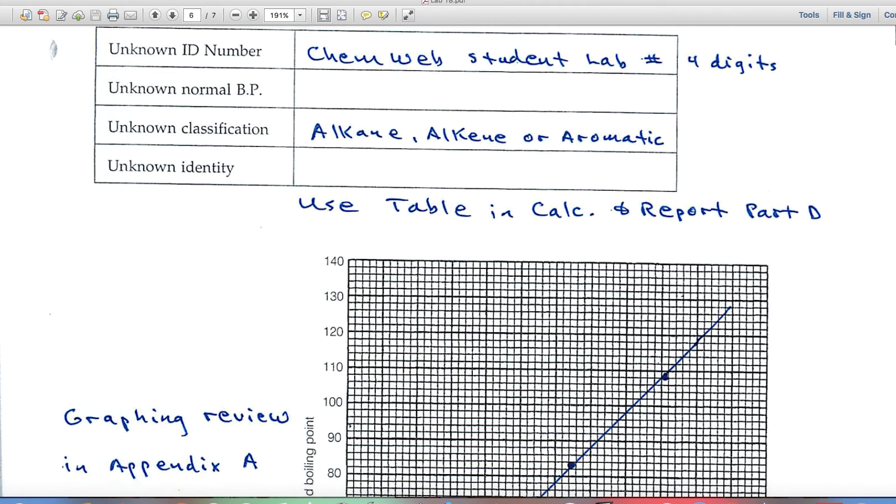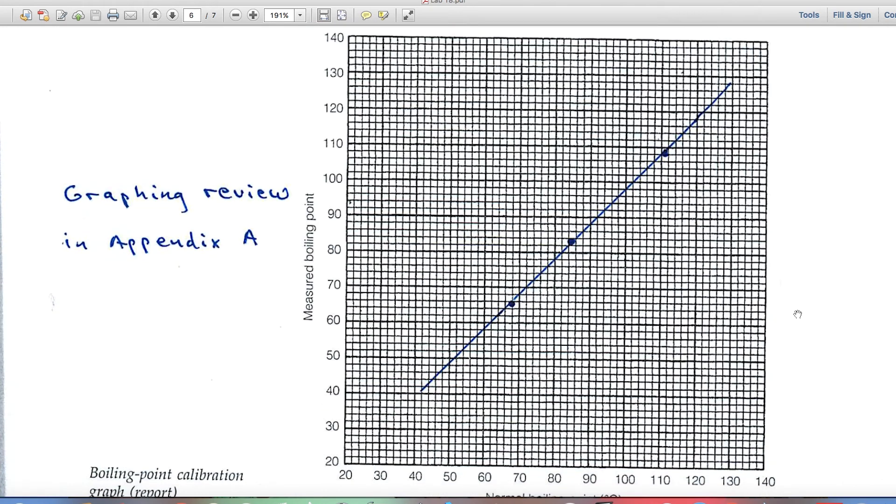Down here's the graph now. You'll not only make this graph, but then you'll use the graph. When you obtain the measured boiling points of three compounds, you'll plot that information here. If you need a little bit of review on graphing, go to Appendix A. Let's just look at the first compound. Its normal boiling point is near 69 degrees centigrade.